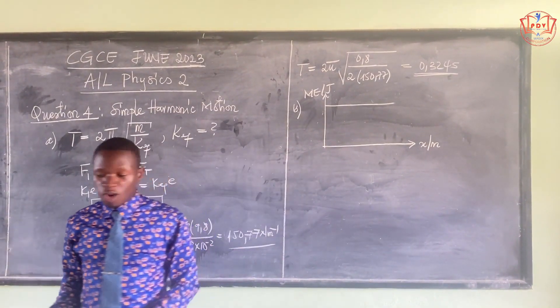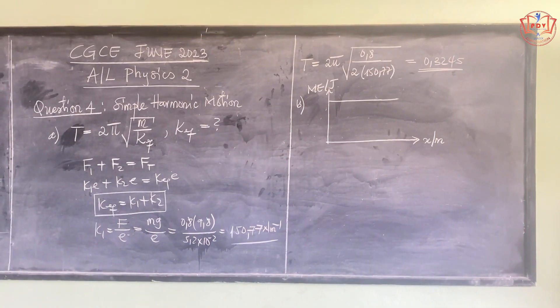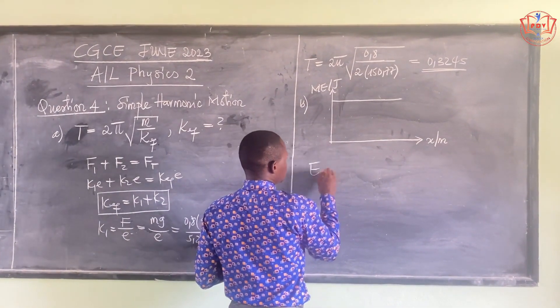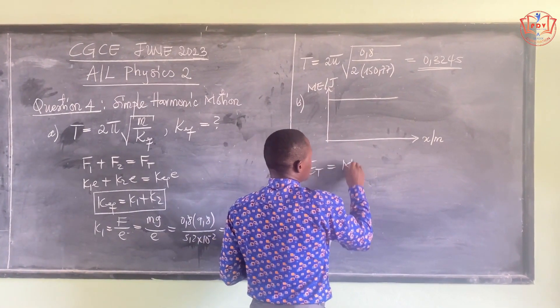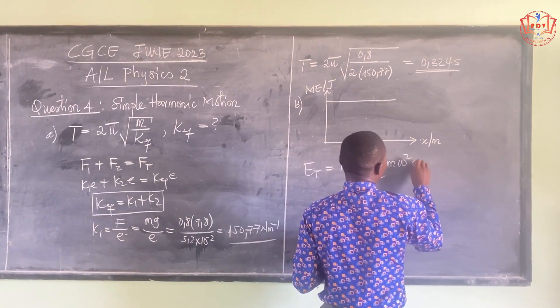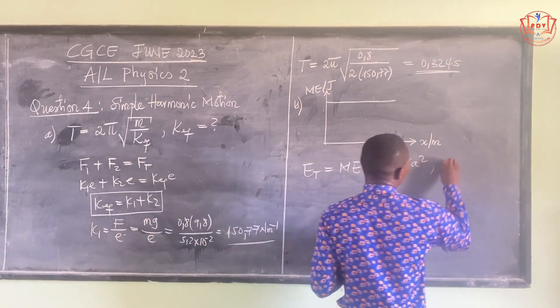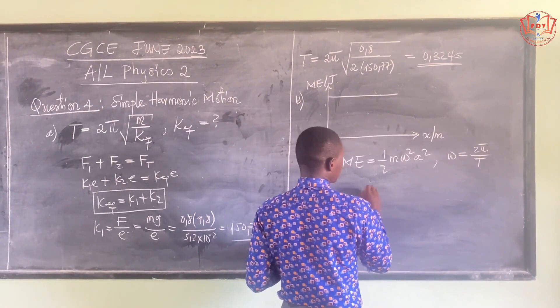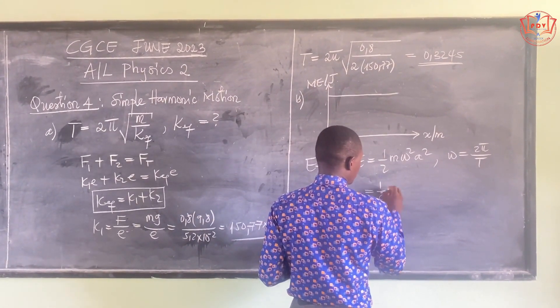We can go ahead to calculate the value of this mechanical energy. The total energy or mechanical energy is given as (1/2)mω²a², where omega is 2π over the period. So, if we put here, we have 1/2 times the mass 0.8, omega 2π over the period 0.324, all squared.